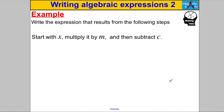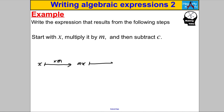Some more examples — if you're feeling confident you may want to pause and try these yourself. Start with X, multiply it by M — a mathematician writes that as MX (usually in alphabetical order) — and then subtract C, giving MX subtract C. The only difference here is that we're multiplying by algebraic terms and subtracting algebraic terms rather than numbers.